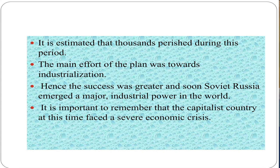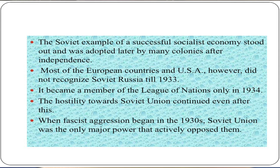The main effort of the five-year plan was towards industrialization, and soon Soviet Russia emerged as a major industrial power in the world. It is important to remember that the capitalist countries at this time faced a severe economic crisis, while the Soviet Union gave an example of a successful socialist economy, which was later adopted by many colonies after independence. Most of the European countries and the USA did not recognize Soviet Russia till 1933, and it became a member of the League of Nations only in 1934. The hostility towards the Soviet Union continued even after this. When fascist aggression began in the 1930s, the Soviet Union was the only major power that actively opposed it.